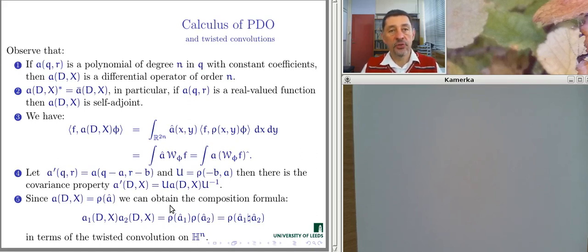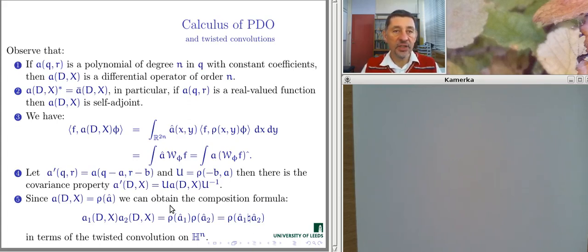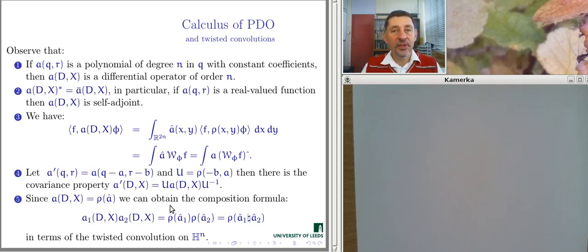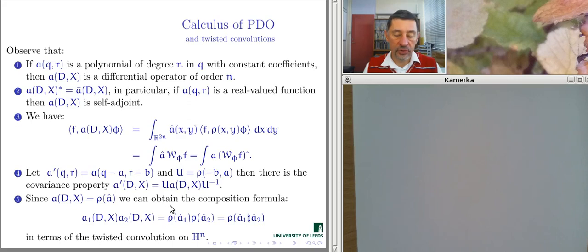There is a second version of the differential calculus — the Kohn-Nirenberg calculus — which historically appeared probably first and is quite popular among mathematicians not seeking a connection with quantum mechanics. The two theories are not essentially different; there are explicit maps showing how symbols shall be transformed when moving from one calculus to another, and we are able to obtain essentially the same collection of results about pseudo-differential operators.